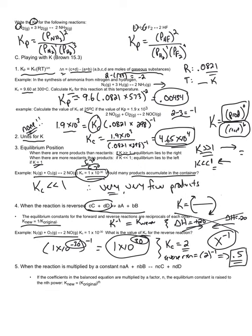If you multiply a reaction by a coefficient — for example, doubling the reaction — enthalpy would also double. K is different. With K, if I double a reaction, I take the K value and raise it to that coefficient power. So if I double a reaction, I have to square the original K value. I don't multiply it by 2 — I raise it to the coefficient power. Everything with enthalpy is now different with K; we have to keep that straight.